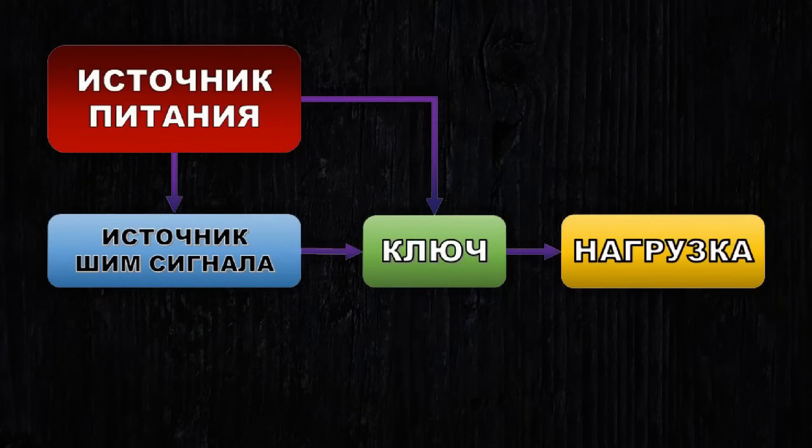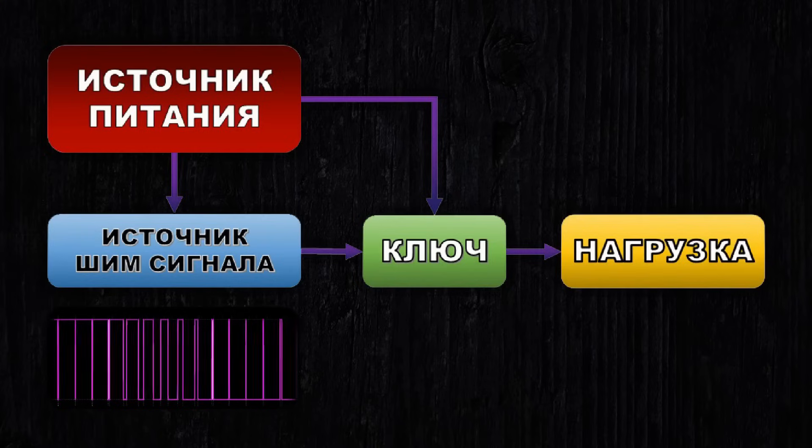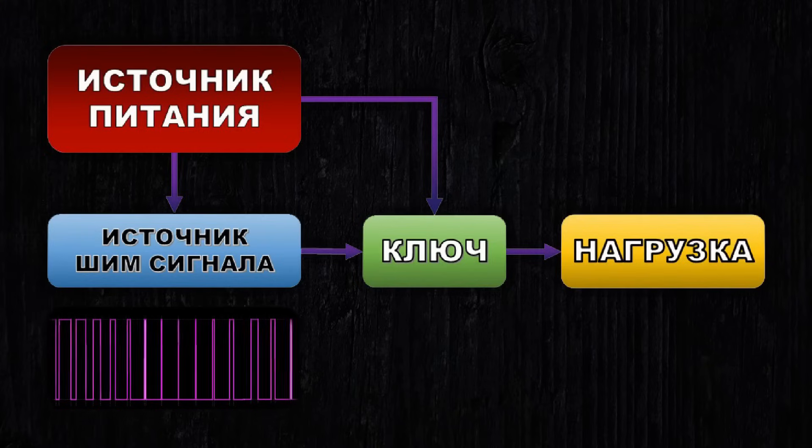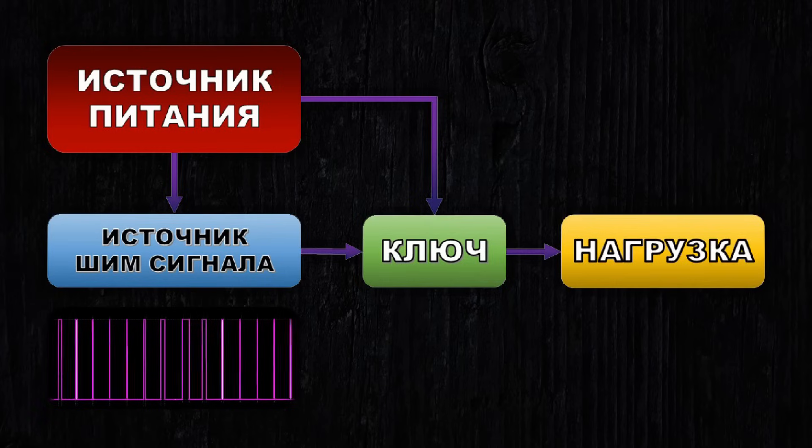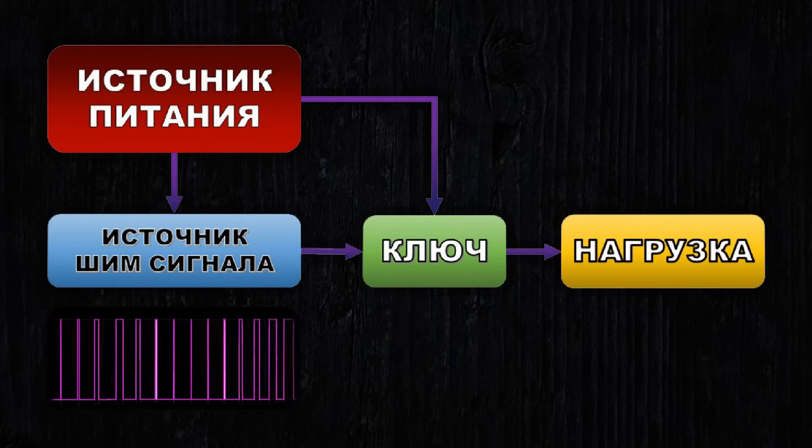And in most cases, a PWM signal is used for this, which is applied to the key element through which the load is powered. In today's video, I want to tell you about five interesting and useful circuits that will allow you to generate this very PWM signal.